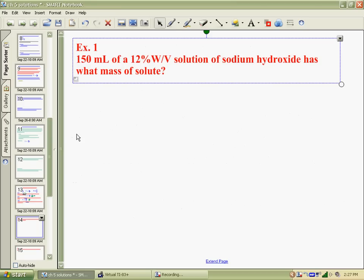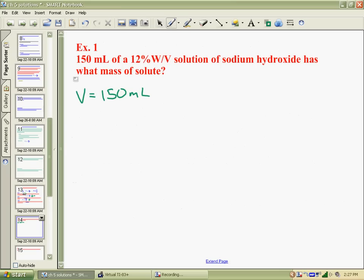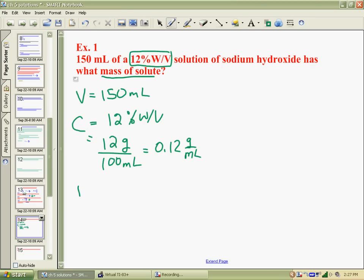We have a 150 mil solution. 150 mil is our volume, so 150 milliliters. This concentration, 12% weight to volume, that's concentration, 12% W/V is equivalent to 12 grams per 100 mil, which is when you divide it 0.12 grams per milliliter. Now what is the question asking for? The question is asking for what mass of solute, m, is our unknown.